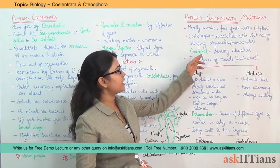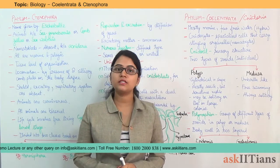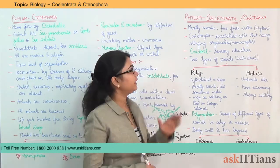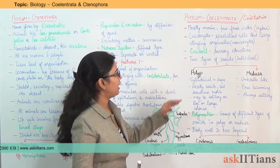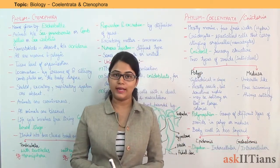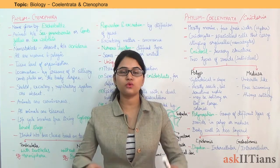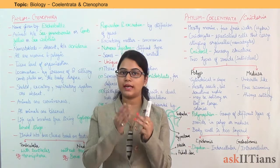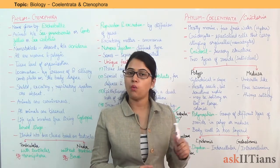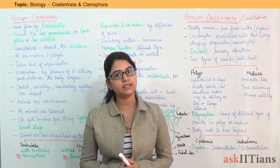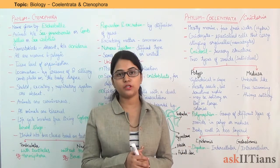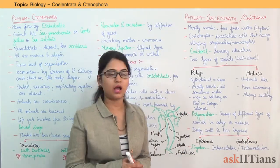Cnidocytes are the sensory stinging structures found in Coelentrata. Two types of zooids are found in Coelentrata — zooids meaning individuals. So there are two types of individuals: one is the polyp and one is the Medusa. Let's see what is the difference between polyp and Medusa.